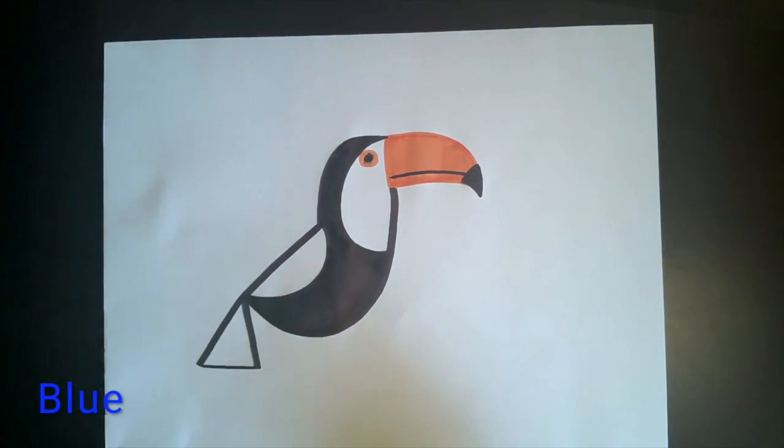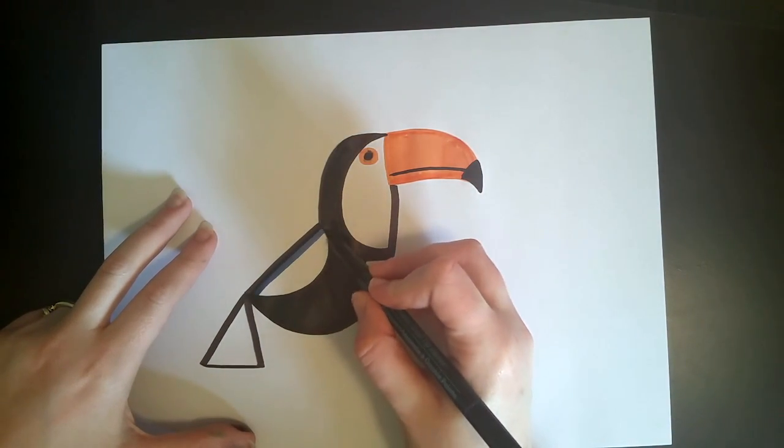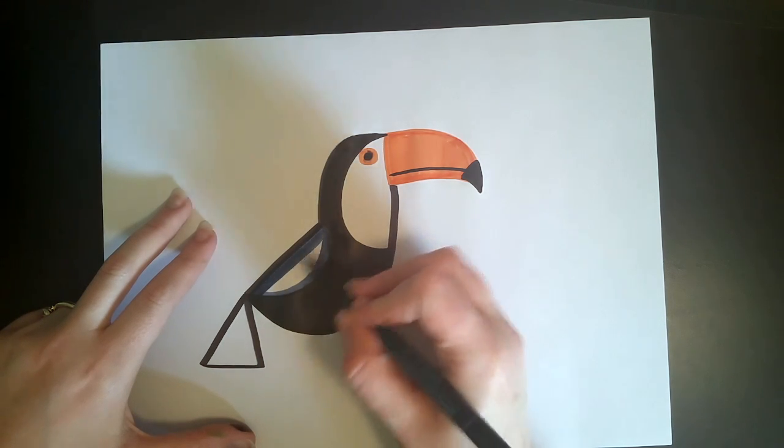Now get your dark blue. It needs to be a pretty dark blue here. And go ahead, color in that wing shape, and then we're going to color in the tail.